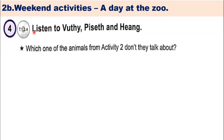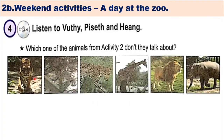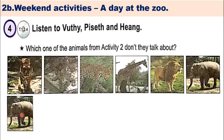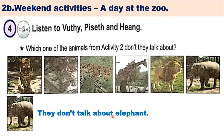Now answer our questions. Which one of the animals from activity 2 don't they talk about? The animals are: tiger, crocodile, leopard, giraffe, lion, elephant. They don't talk about elephants.